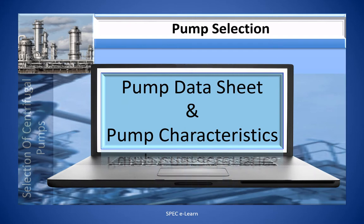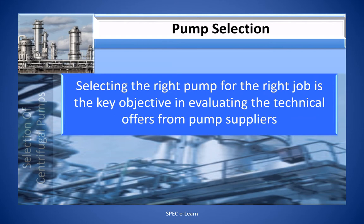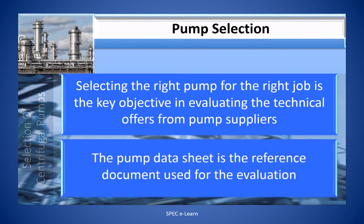The pump data sheet and pump characteristics — the pump selection process starts with these two documents, which contain several useful pieces of information. Selecting the right pump for the right job is the key objective in evaluating the technical offers from pump manufacturers. The pump data sheet is the reference document used for evaluation because the pump manufacturer develops a pump design based on the technical data provided in it.